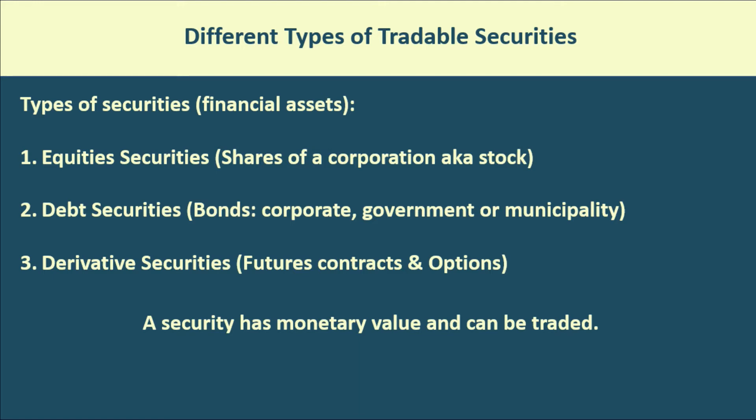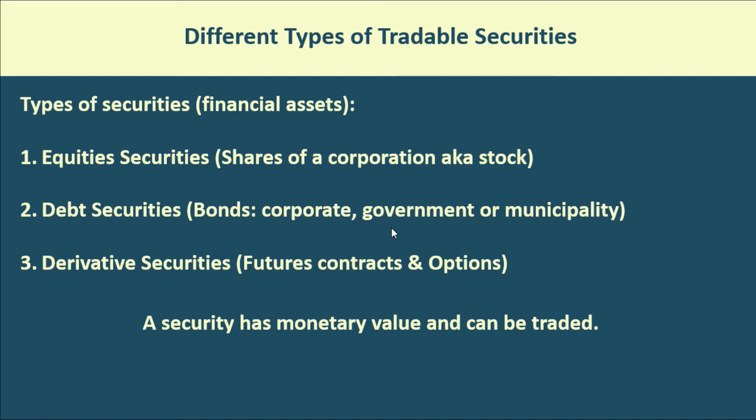The third type of security is a derivative. Derivatives consist of futures contracts and options, which are topics for a completely different video — they can get a bit complex. So a security essentially just has monetary value and can be bought and sold, or traded. So we've got stocks, bonds, and derivatives, which consist of futures contracts and options.